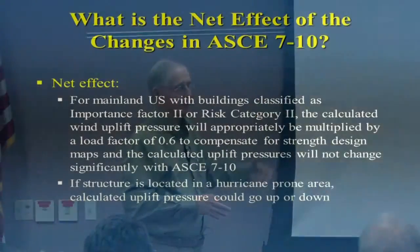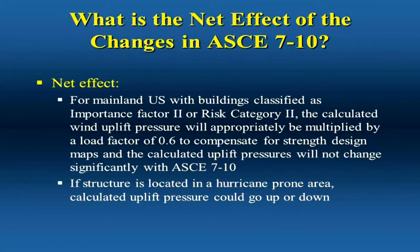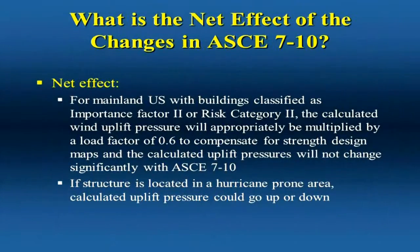For the mainland U.S. — even California, Oregon, Washington, the coastal states — you're not going to see a change. By the time you multiply with a load factor of 0.6 to compensate for strength design maps, it's not going to change significantly, so you're pretty much where you were before. When you get close to the hurricanes, you may go up or down depending on where the building is. If you're near the ocean, the uplift pressure will probably go up. If you're further inland, you may not even be in a hurricane-prone region anymore, so it'll go down.